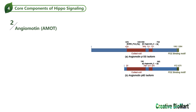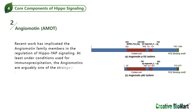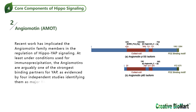As members of the motin protein family, angiomotins are characterized by a conserved N-terminal glutamine-rich domain, followed by a coiled-coil domain and a C-terminal PDZ binding motif. Recent work has implicated the angiomotin family members in the regulation of Hippo-YAP signaling. The angiomotins are arguably one of the strongest binding partners for YAP, as evidenced by four independent studies identifying them as major YAP-associated proteins.